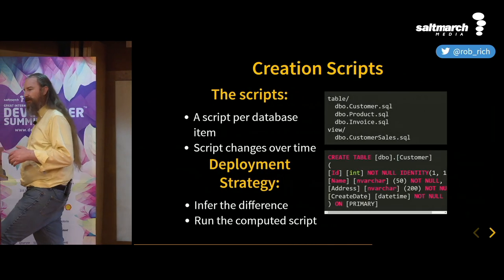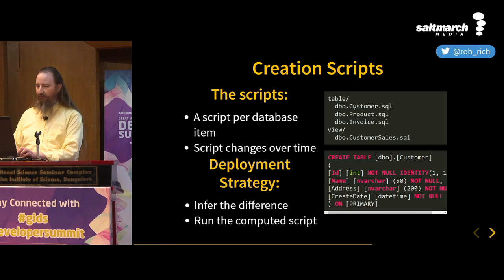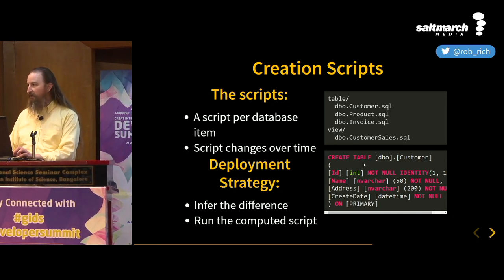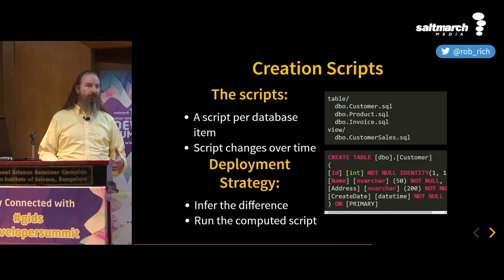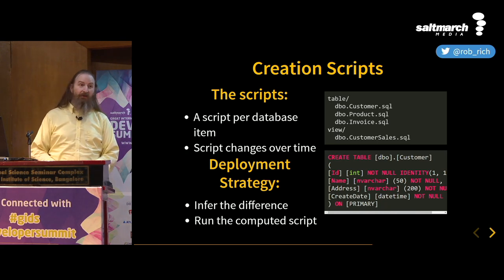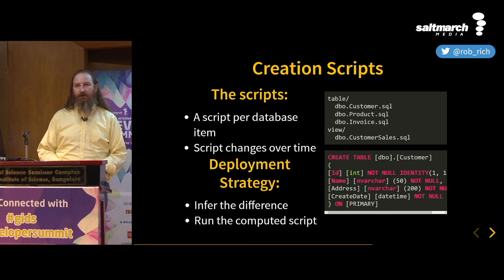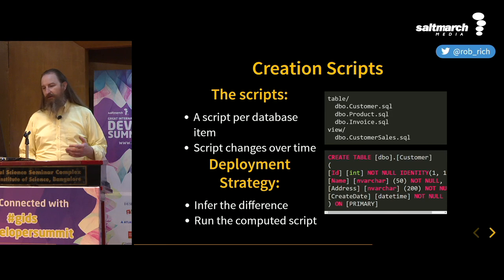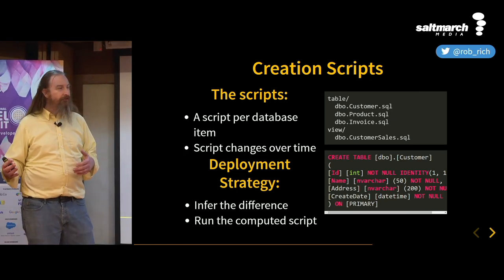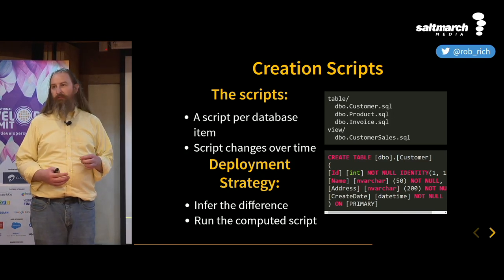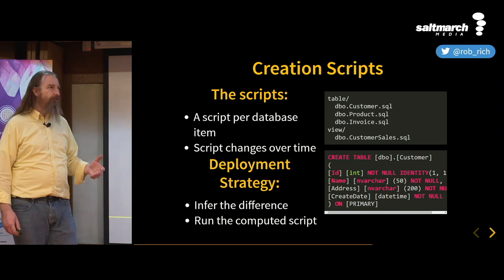Let's look at each approach. In a create script approach, we have scripts for each object — customer, product, invoice, a view. Each script is the create script for that object. As our schema changes, we modify that file. Our git blame works great — we can see when the file changed and which change occurred when. But as we go to deploy this, we need an engine that can infer the difference between our SQL directory and the database, compare them, and infer what SQL script will get from here to there.